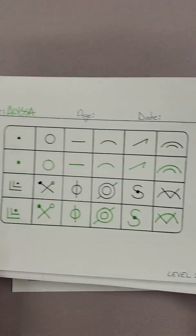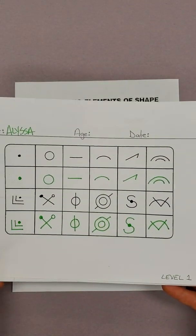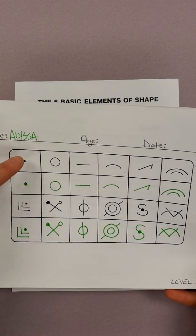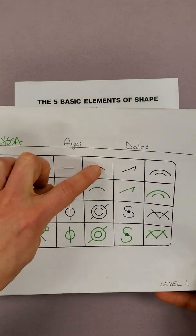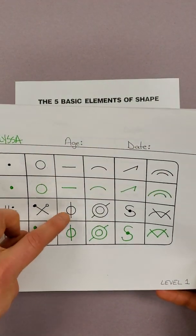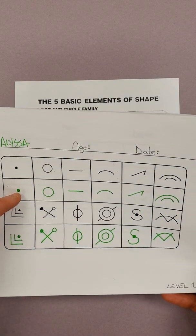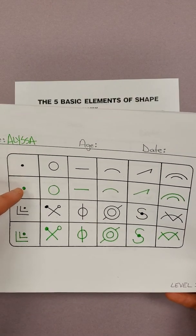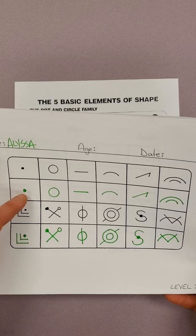So I've already completed level one. You can see these were the original lines and shapes. And then I echoed, I repeated what I saw in the box above, I echoed it down below.